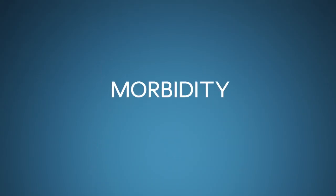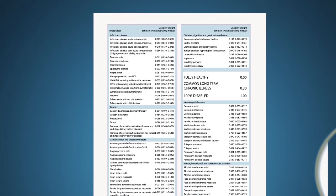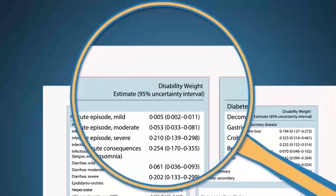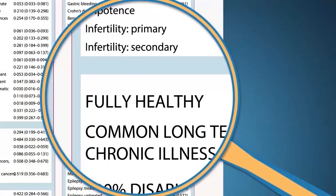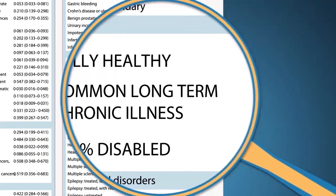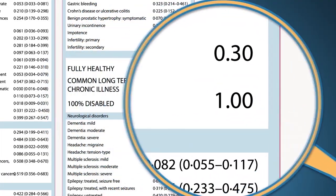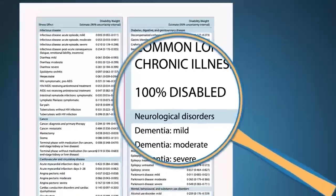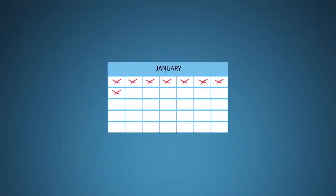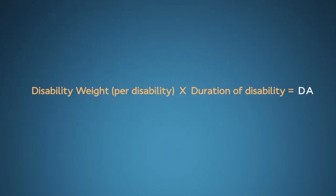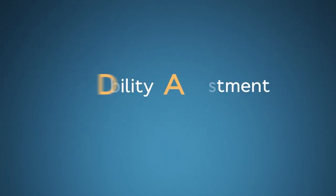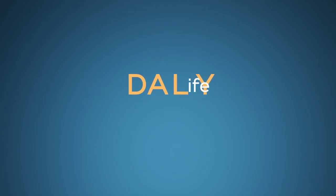Morbidity is a bit more complicated to calculate. First, each illness effect is given a severity rating, called a disability weight, ranging from 0, which means fully healthy, to 0.3, which is common for long-term chronic illnesses, to 1, which means 100% disabled. Next, because effects can be short or long-term, duration of the morbidity is factored in. Think of this as the DA in DALY, or disability adjustment, due to morbidity. When both mortality and morbidity contributions are added together, you have a full DALY score.